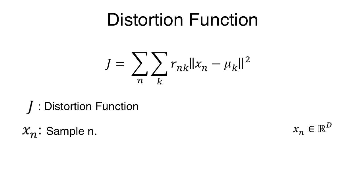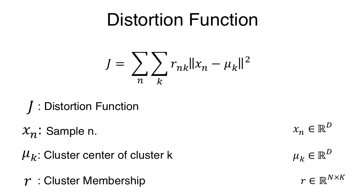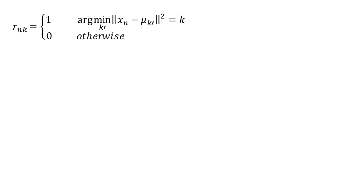xn is the nth sample. mu k is the kth cluster center. And r represents the cluster membership. Here, it's an n cross k matrix with values either 0 or 1. r n k is equal to 1 for only that value of k where the kth cluster center is the closest. Otherwise, it's 0. So you can see that every row is actually a one-hot encoded vector.